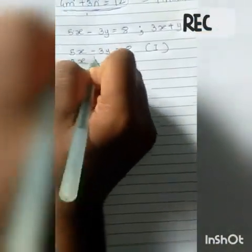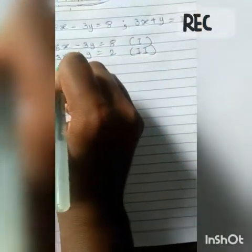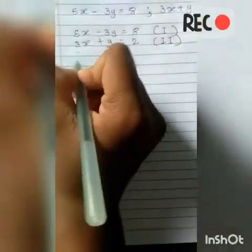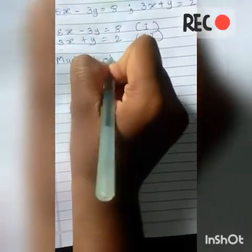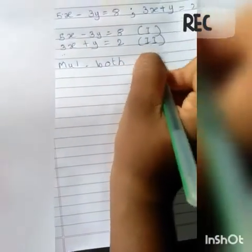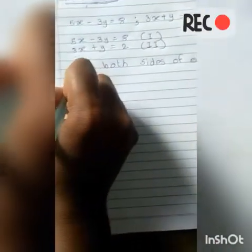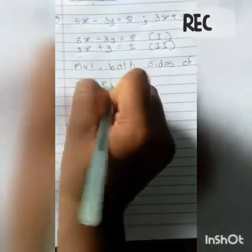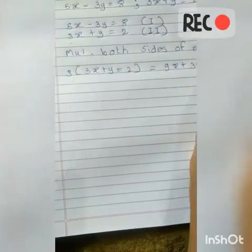We multiply the second equation by 3. Multiplying both sides of equation 2 — which is 3x + y = 2 — by 3, we get 9x + 3y = 6.